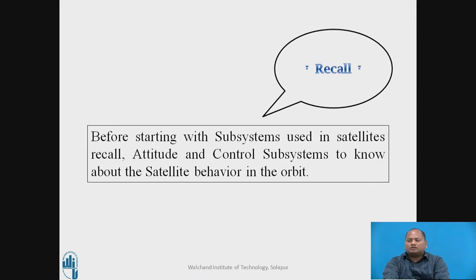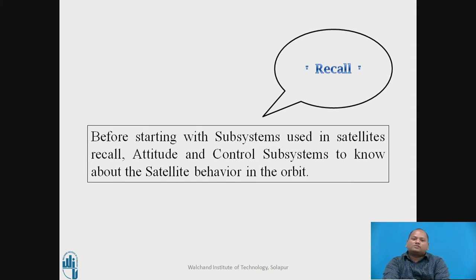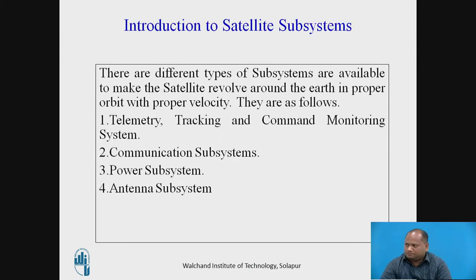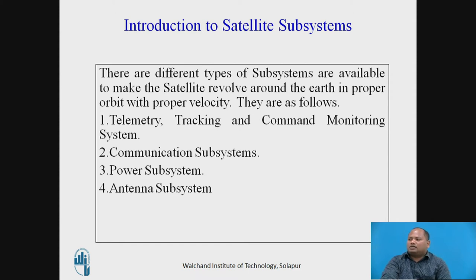Before going to the next slide, let us recall what AOCs are. AOCs are nothing but attitude and control subsystems — the subsystems that decide the satellite's behavior in orbit. Now let us see the introduction to satellite subsystems. There are different types of subsystems available to make the satellite revolve around the earth in the proper orbit with proper velocity.